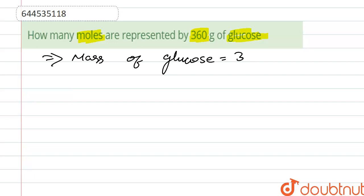Mass of glucose is given, that is 360 gram. And we know that the molar mass of glucose, that is C6H12O6, which is equal to 180 gram per mole. This is the molar mass of glucose.